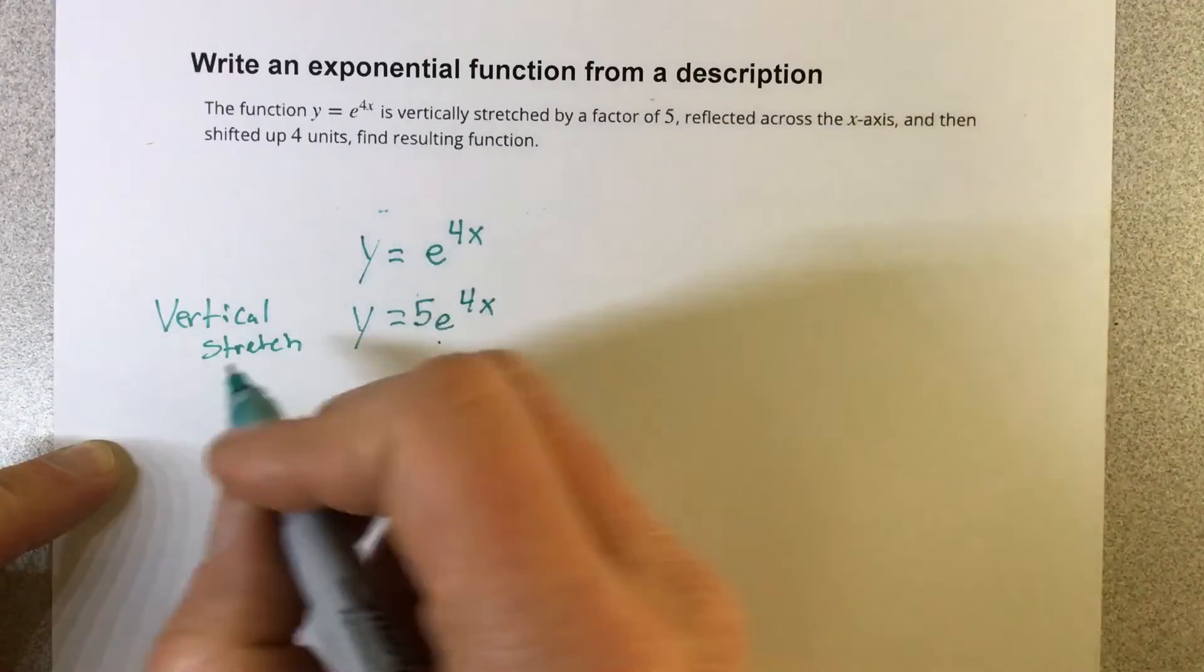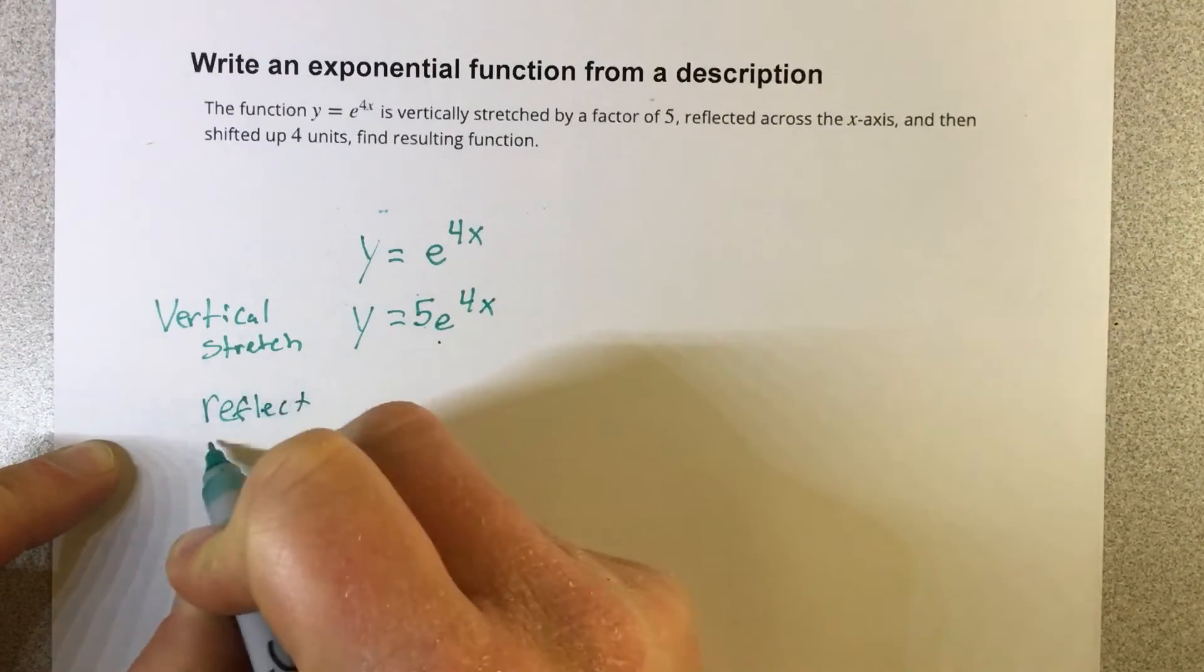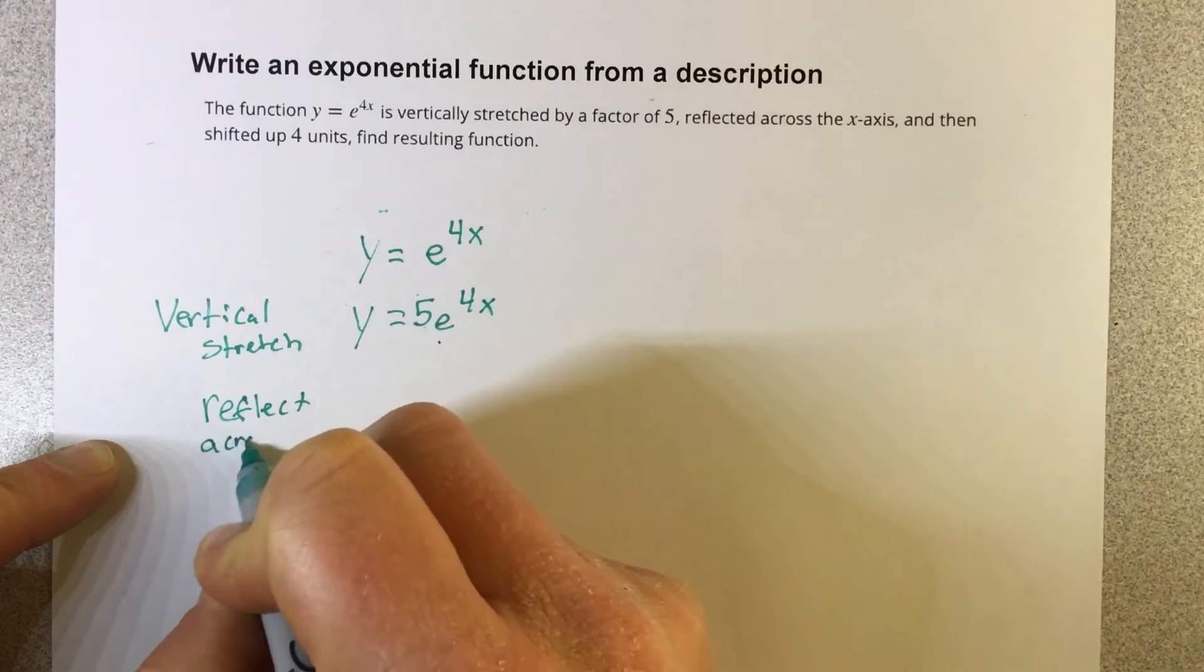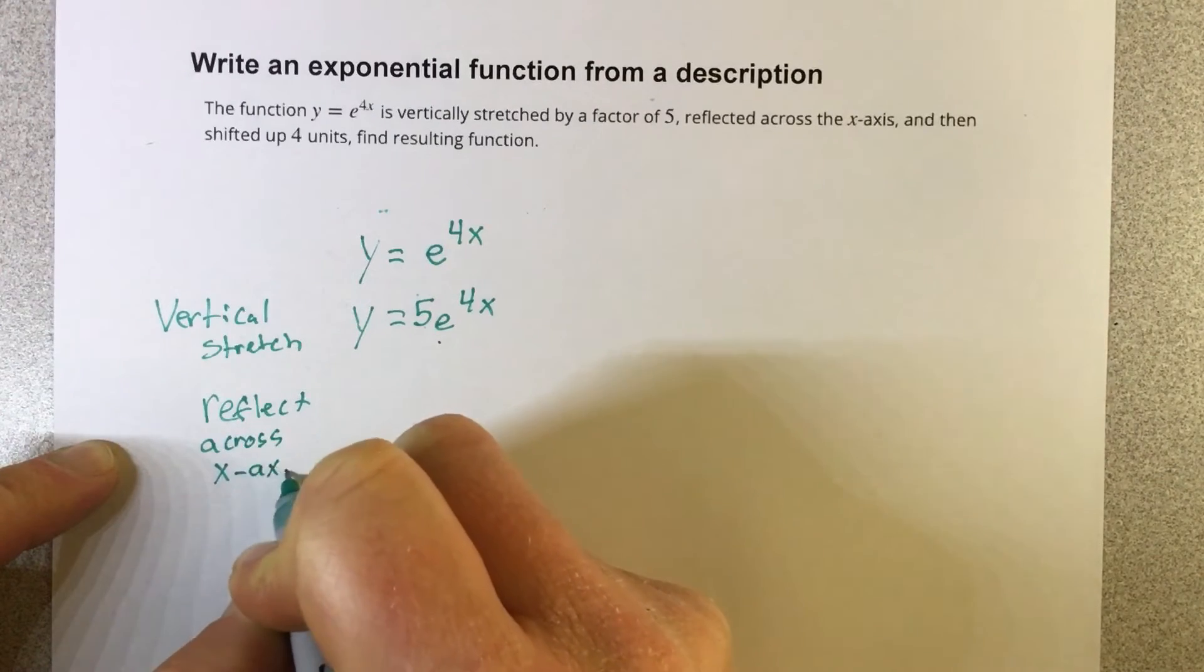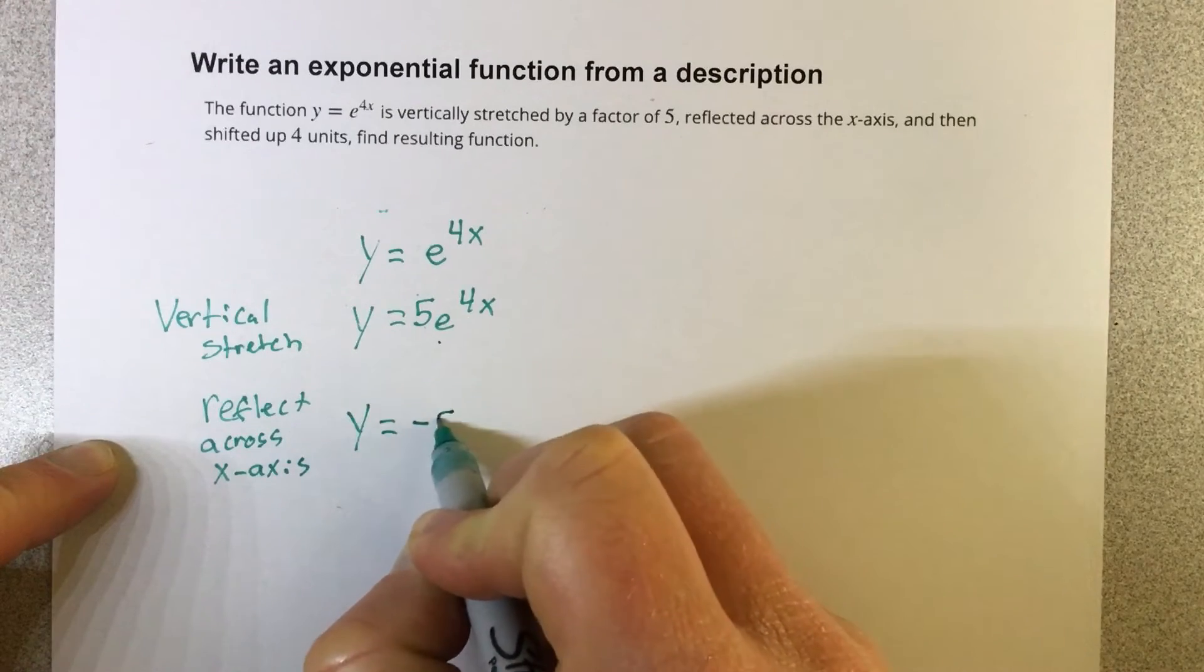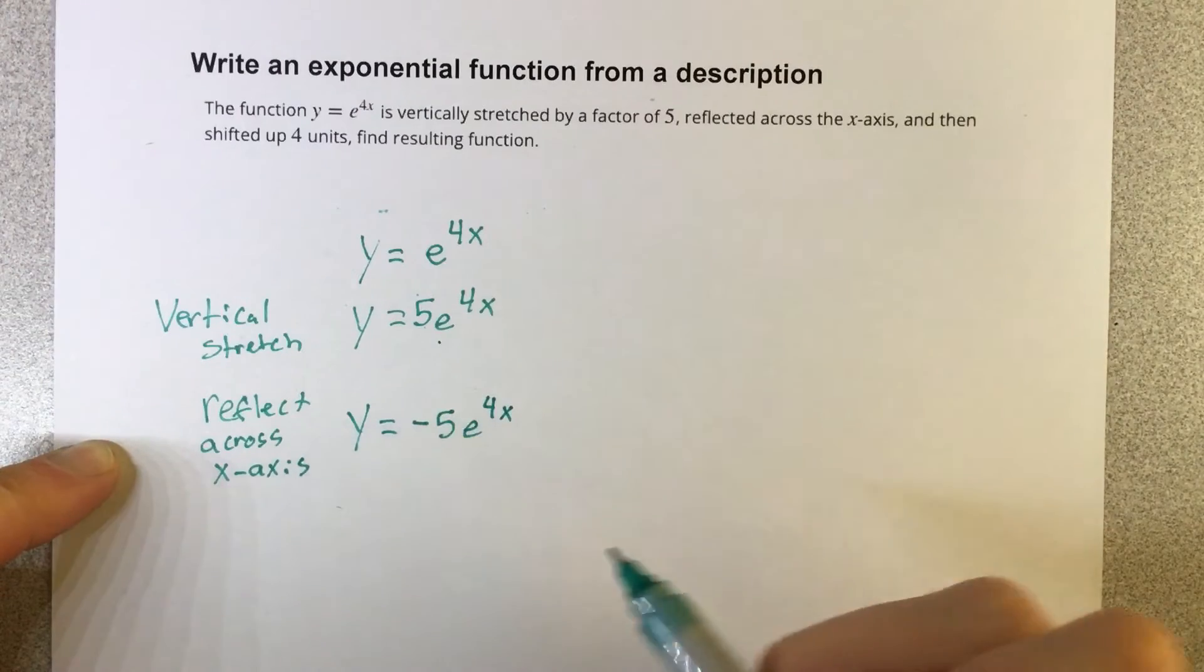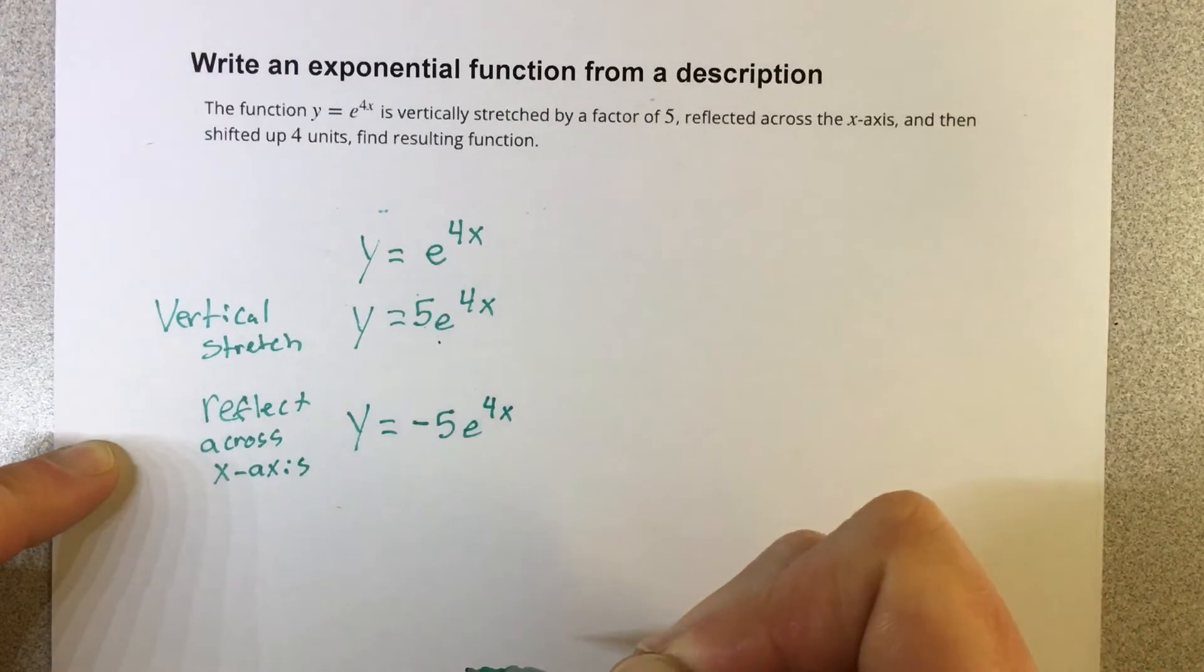Now let's reflect it. We're going to reflect across the x-axis. That will result in y equals negative 5e to the 4x. If I throw a negative on the front of the function, it's reflecting it vertically downwards.